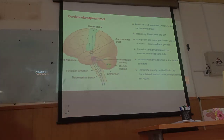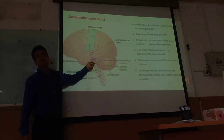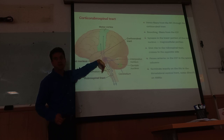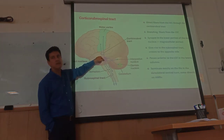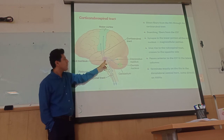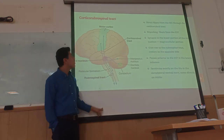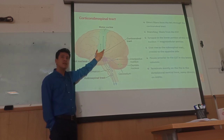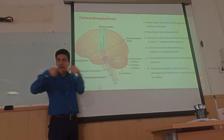Another pathway from the cortex to the spinal cord is the rubrospinal tract. Fibers from the cortex go to the red nucleus in the midbrain. The red nucleus has a parvocellular and a magnocellular portion. The cortical fibers interact with the magnocellular portion. After the red nucleus, neurons cross to the opposite side and descend. So the left side of the cortex activates the right rubrospinal tract, and the right side activates the left rubrospinal tract — the relation is contralateral.